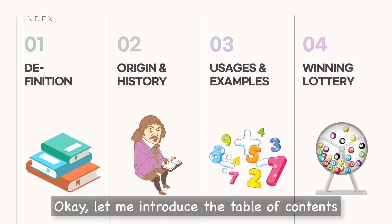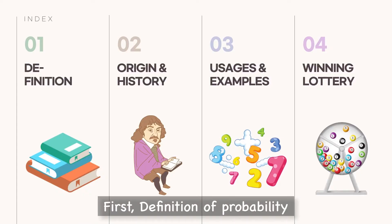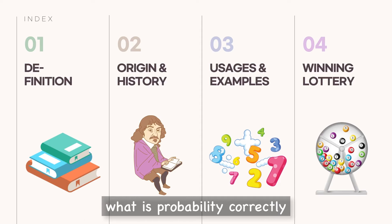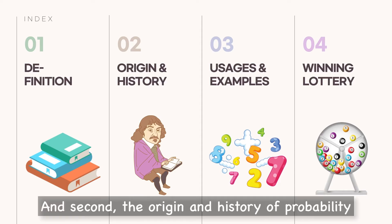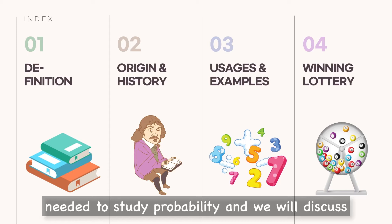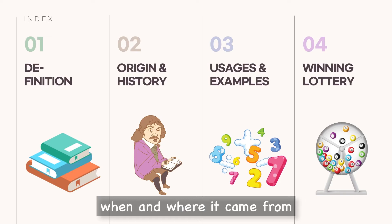Let me introduce the table of contents. First, definition of probability. In this part, we are going to learn what probability is correctly. And second, the origin and history of probability. We are going to know and understand why people needed to study probability, and we will discuss when and where it came from.